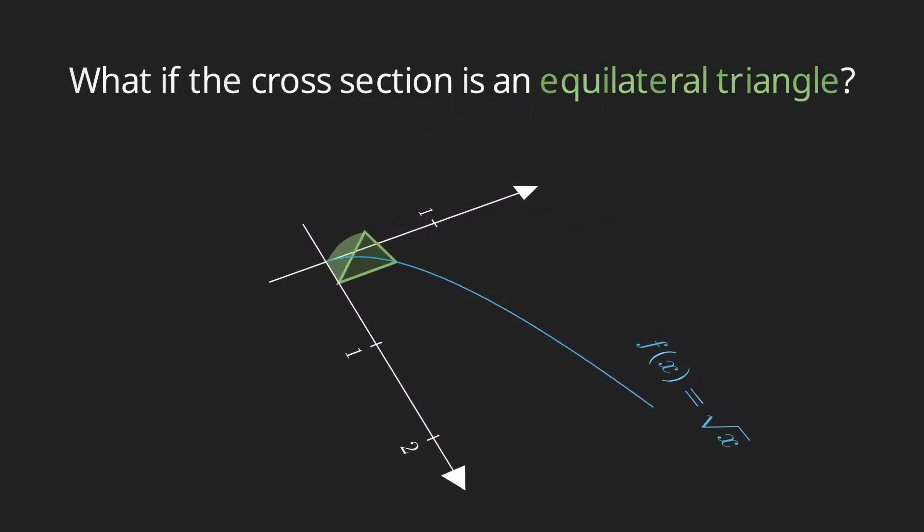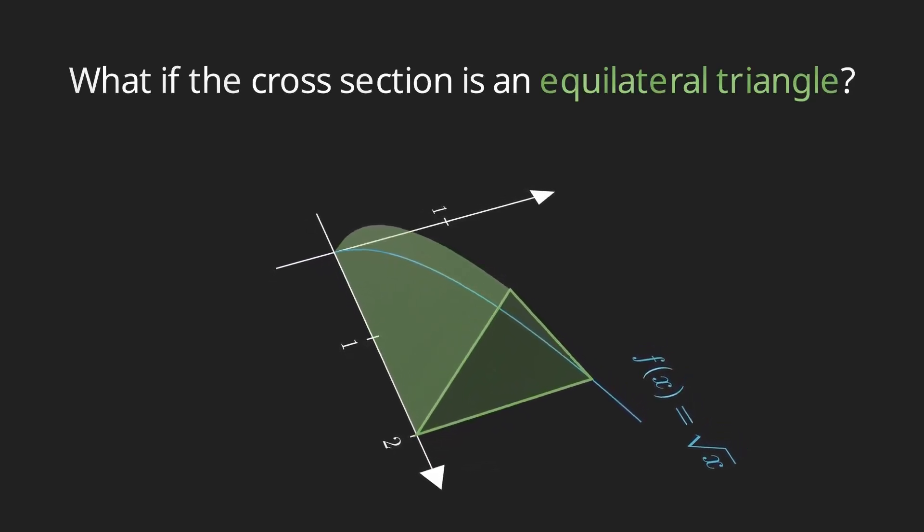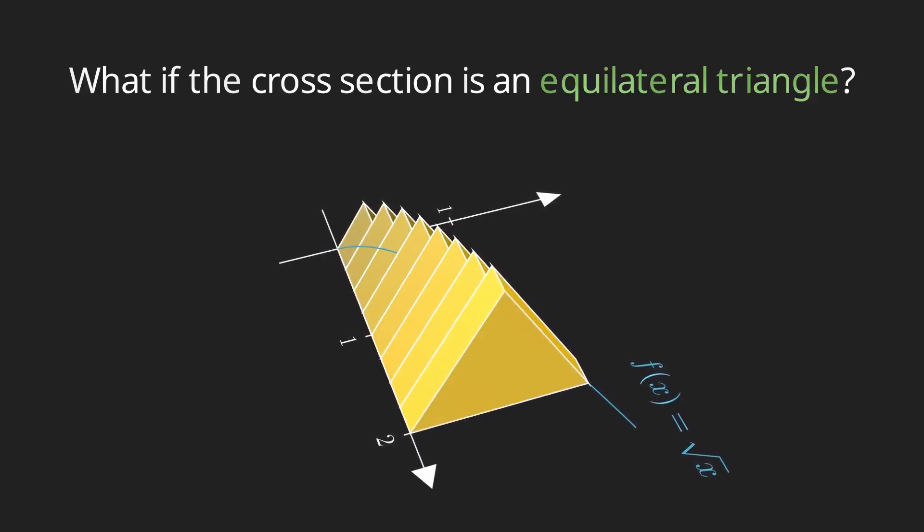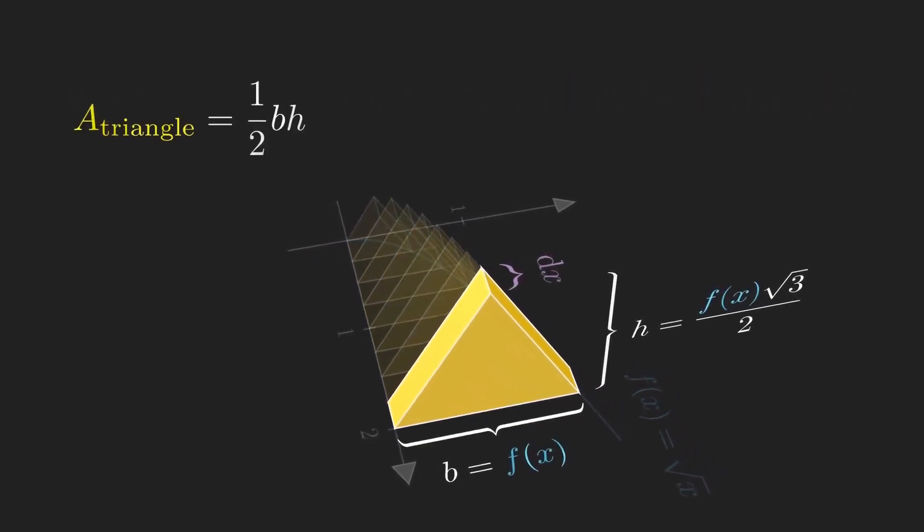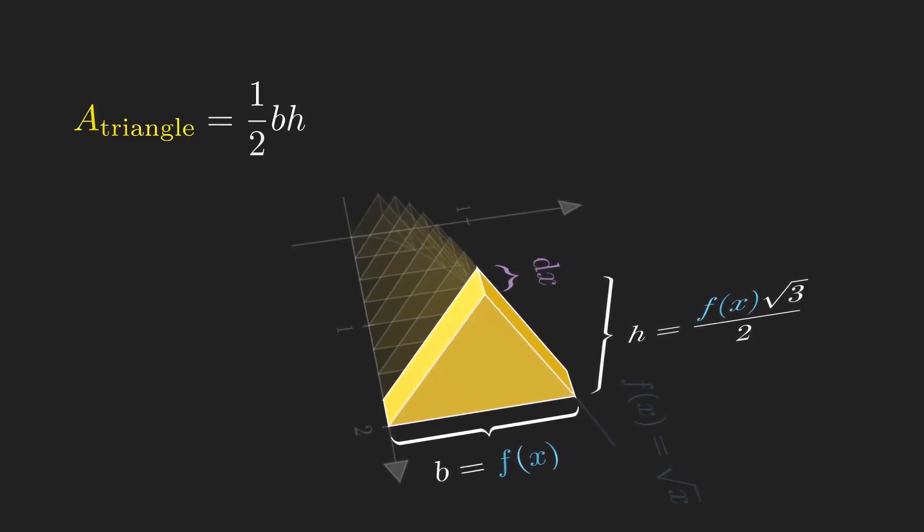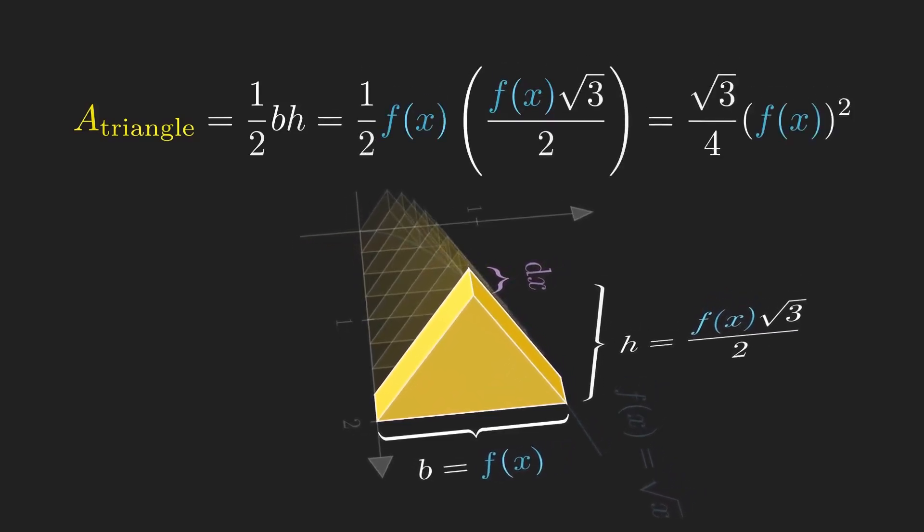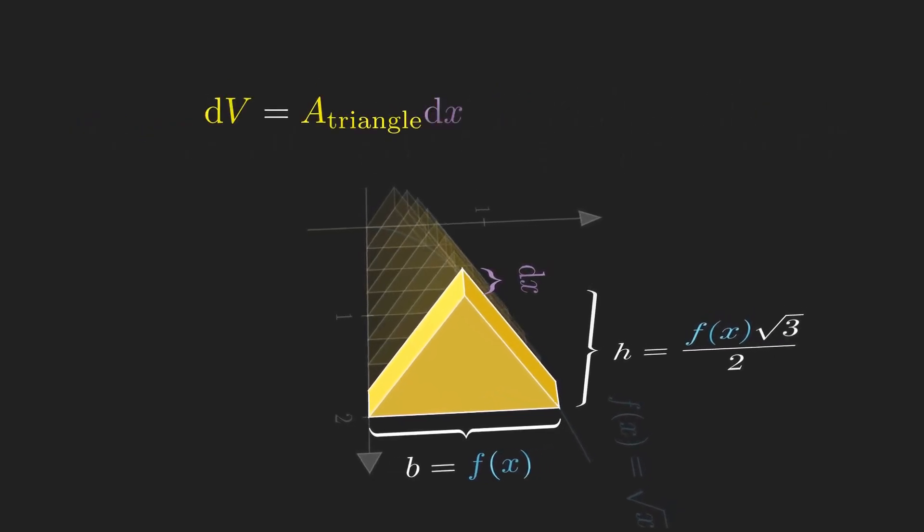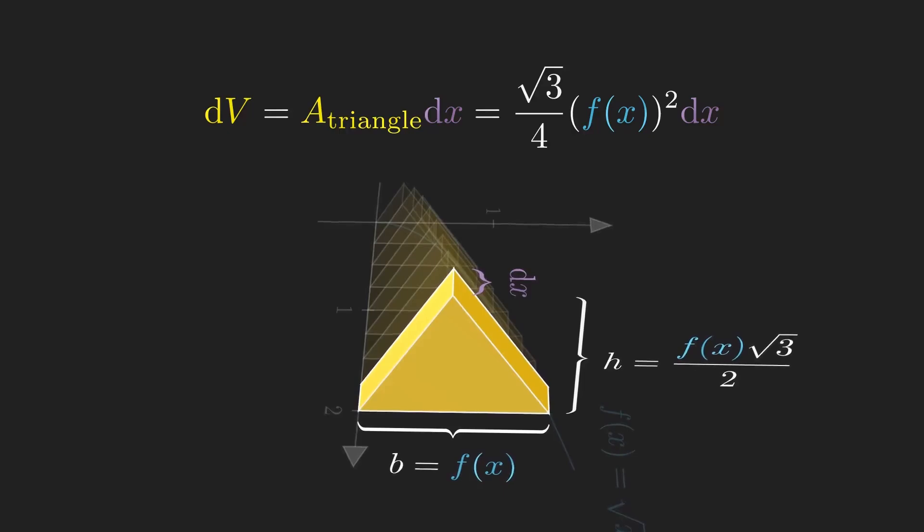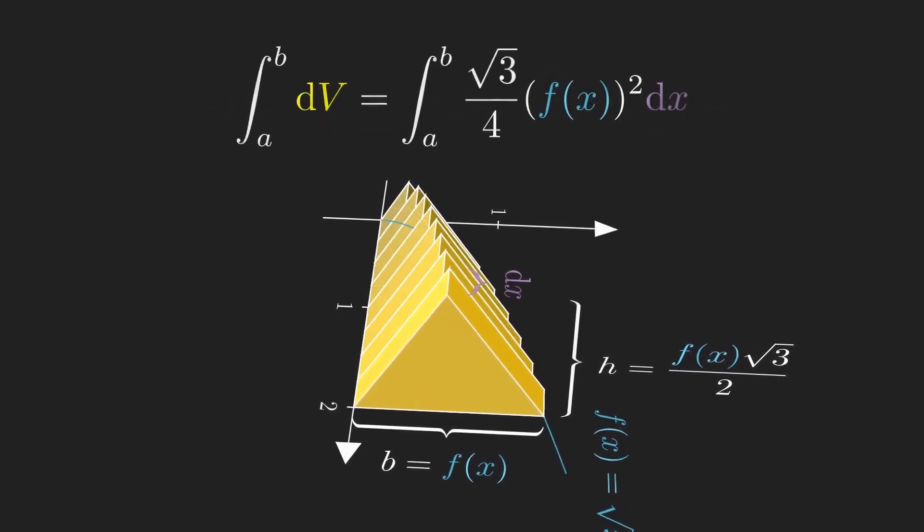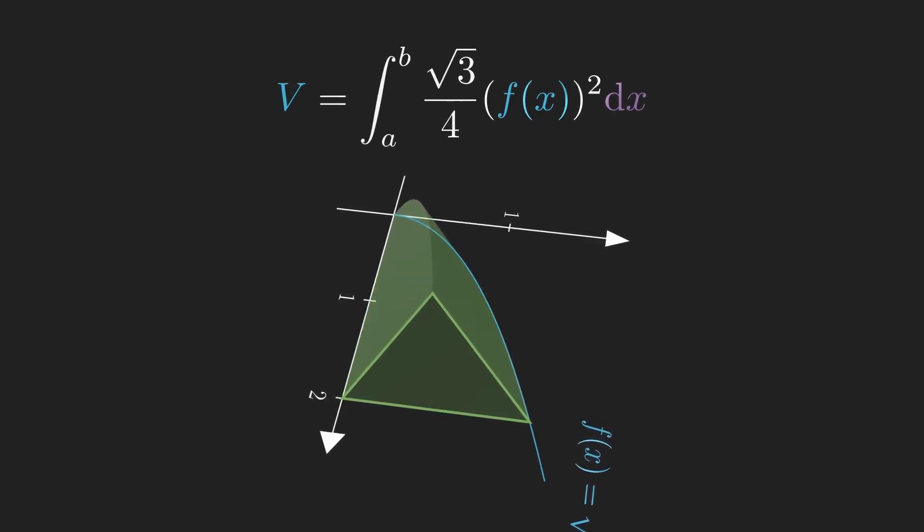If the cross sectionals were equilateral triangles, well we simply just change the formula for what the shape area would be. So we can take an equilateral triangle, notice that the side is just f of x, the height is f of x root 3 over 2, and dx is the small width or change in x, and remember that the formula for an area of a triangle is root 3 over 4 side squared if it's equilateral where the side is f of x. So the volume is just given by the integral of this formula.